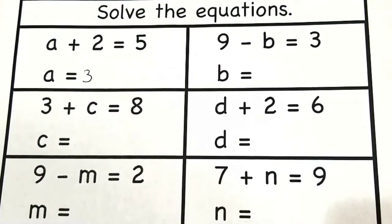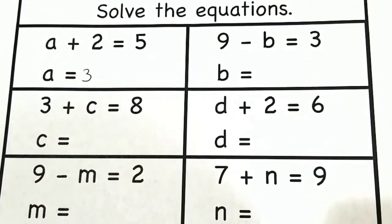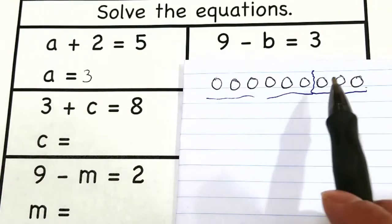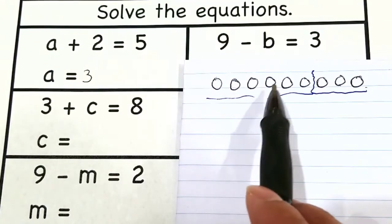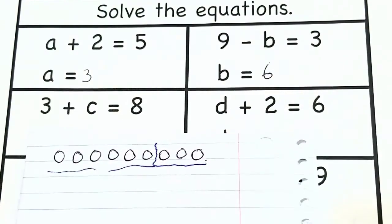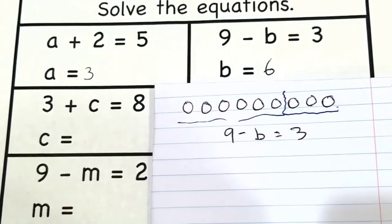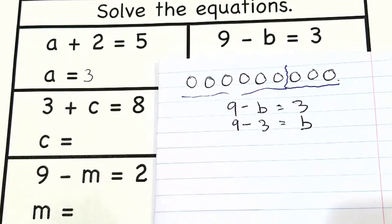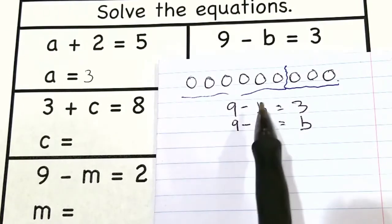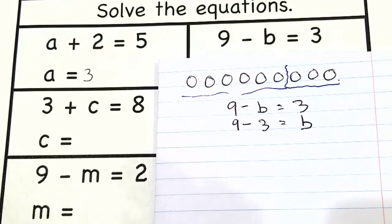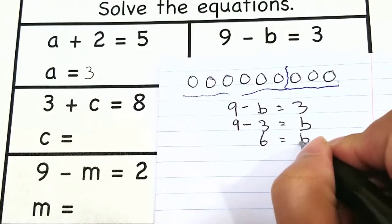For subtraction it's a little bit different, but you can still use your fingers. For example, you have nine fingers and you take away three — one, two, three — how many fingers do you have left? You have one, two, three, four, five, six fingers left, so B is six. If you don't have enough fingers you can draw little circles. Another method is to swap the places of three and B so it becomes nine minus three equals B, and nine minus three is six, so B is six.